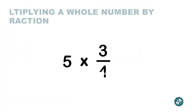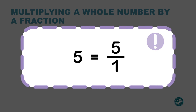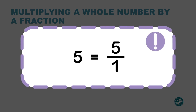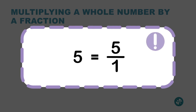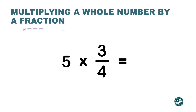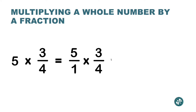Now sometimes you're going to multiply a whole number by a fraction. To do that, we're going to rewrite the whole number — for example 5 — as a fraction by writing a 1 under it. After you write 5 as 5 over 1, then we are multiplying two fractions like we did before.